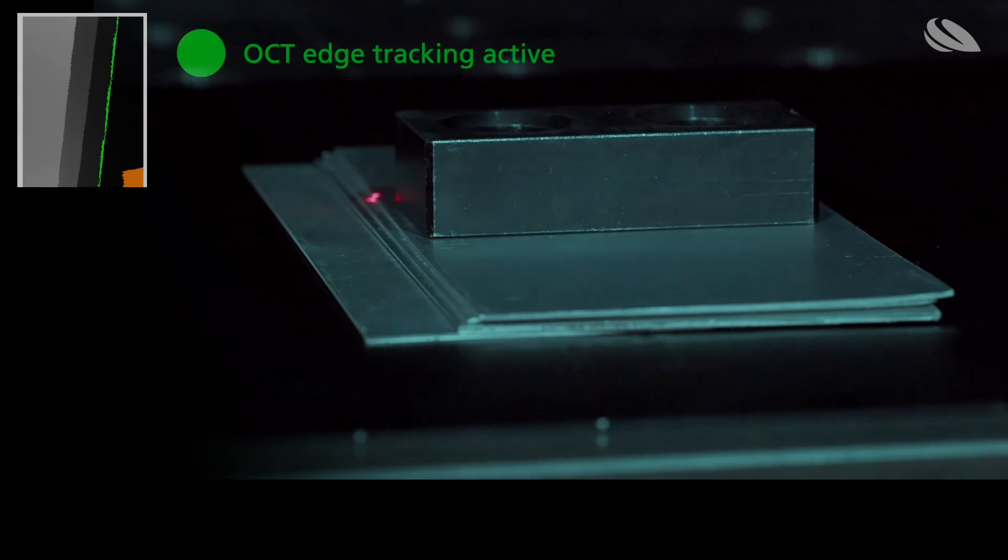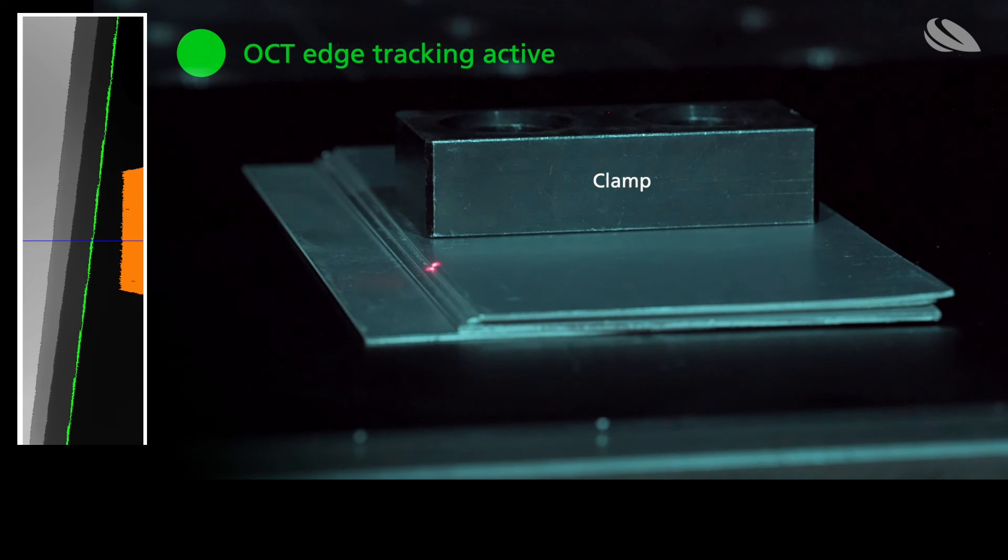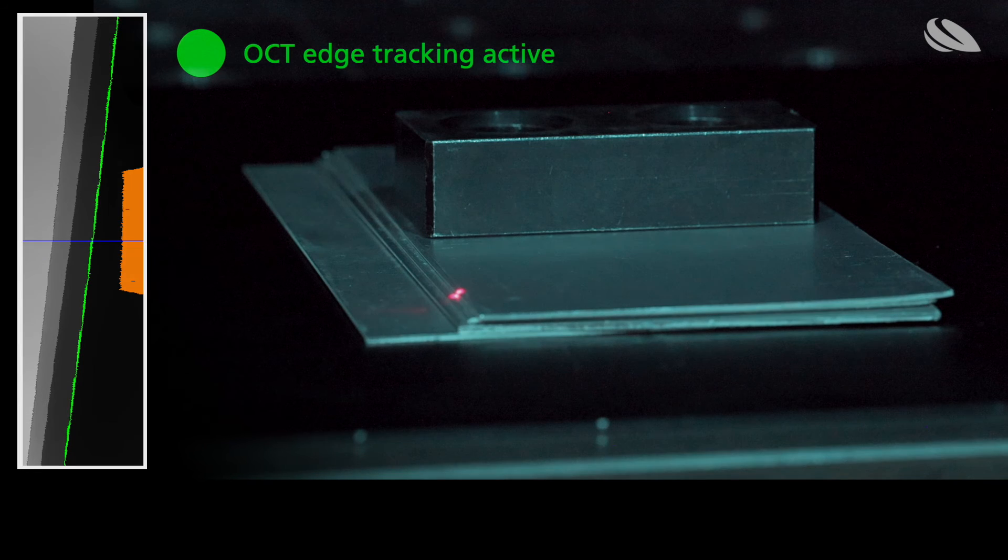The system identifies interfering geometries like clamps, before and during welding. The system reacts automatically by pausing or stopping the welding process.